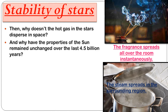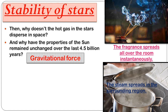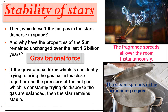Why do the properties of the sun remain unchanged over the last 4.5 billion years? The answer is gravitational force — the force of attraction or gravity holds everything together. The gravitational force between the gas particles of the star keeps these particles together so they don't disperse. If the gravitational force, which constantly tries to bring gas particles close together, and the pressure of the hot gas, which constantly tries to disperse the gas, are balanced, then the star remains stable.